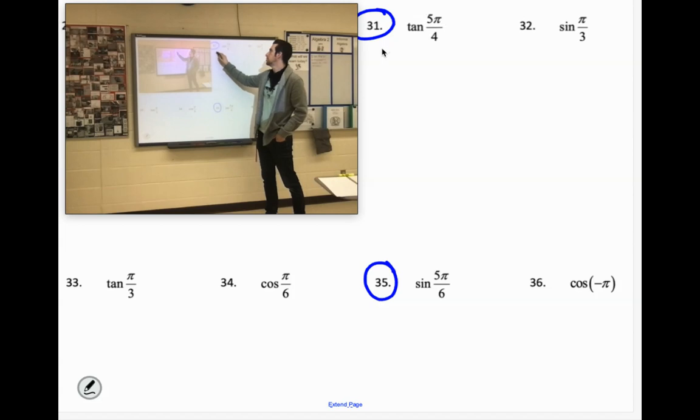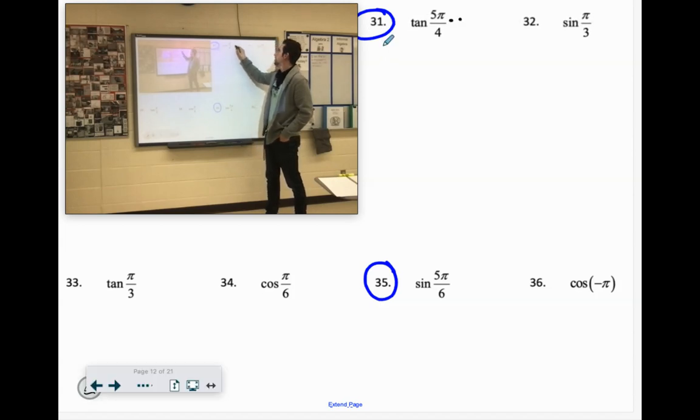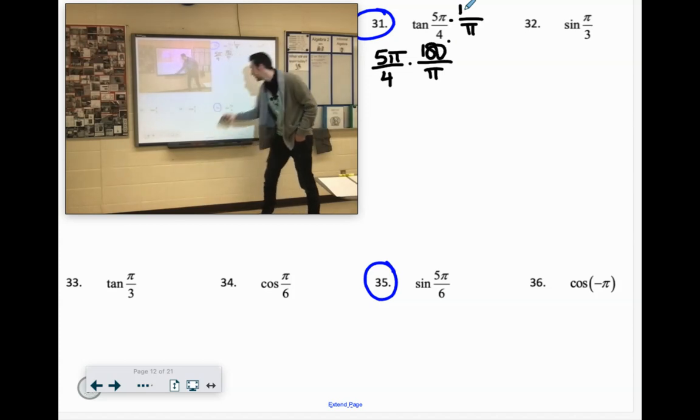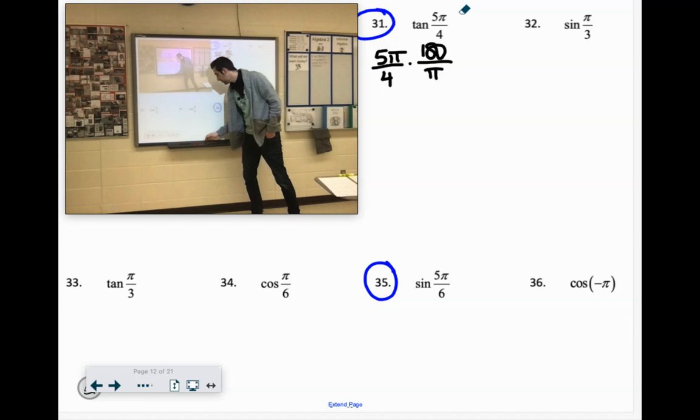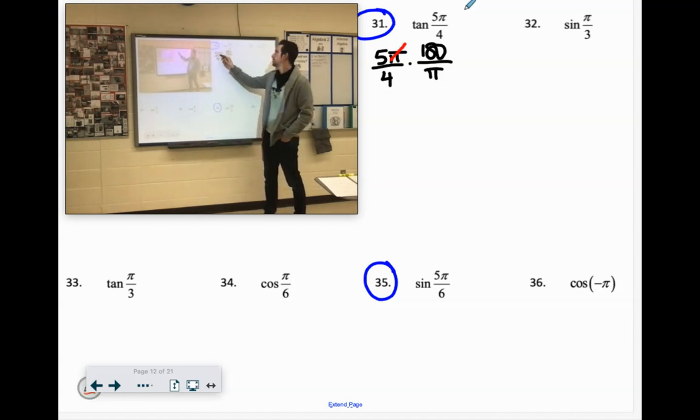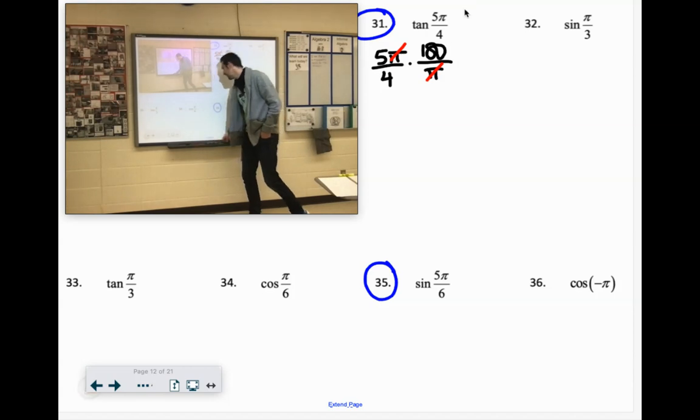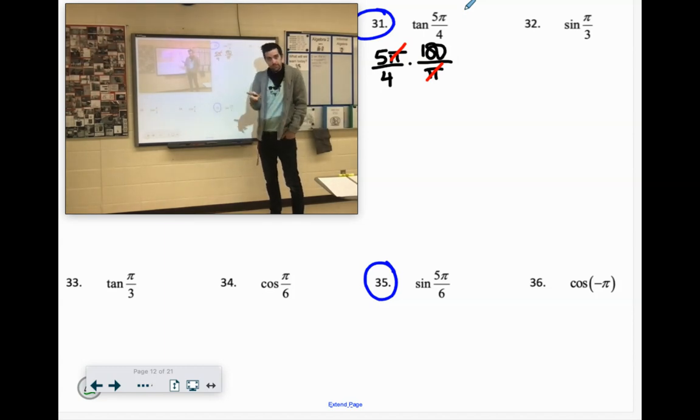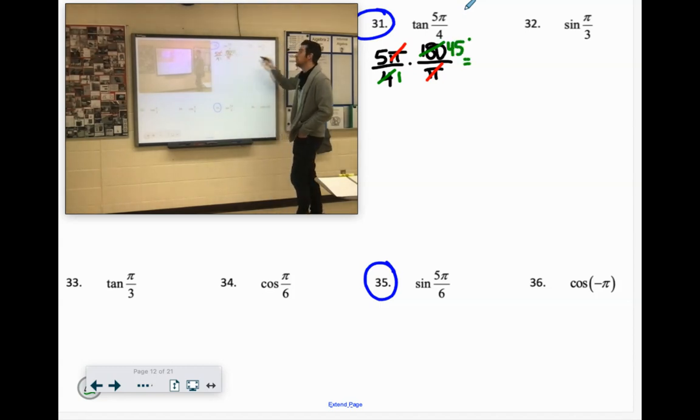So let's do 5 pi over 4. We'll get rid of the pi down there. 180, oh goodness, I'm running out of room. The pi goes down here, 180 degrees goes up top. Simplify what we can. We'll get rid of the pies, we don't need the calories. And then 4 goes into 180, 45 times. If you chop 180 in half it's 90, half of 90 is 45. 180 becomes 45. 5 times 45 is 225.